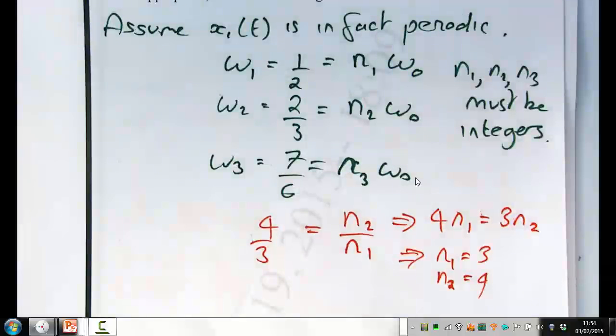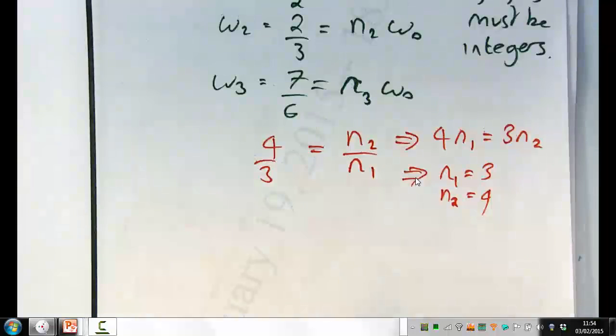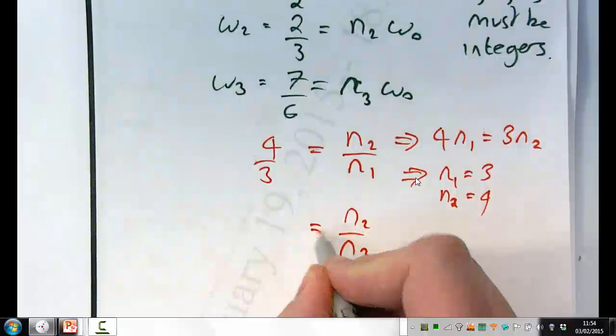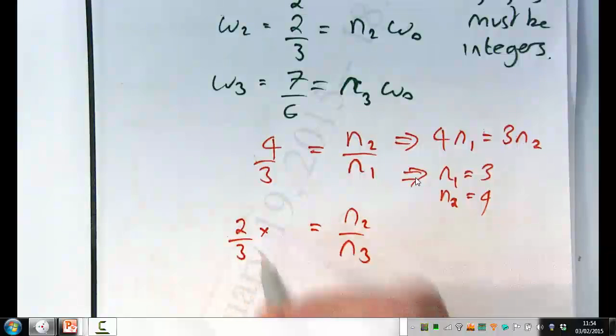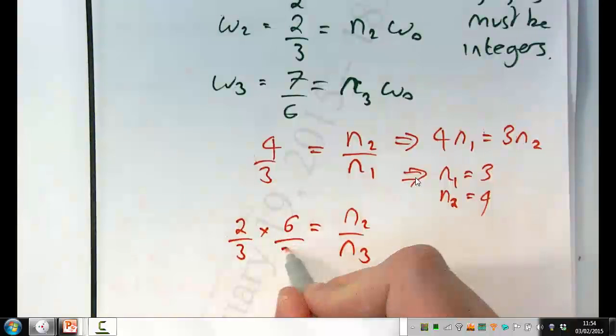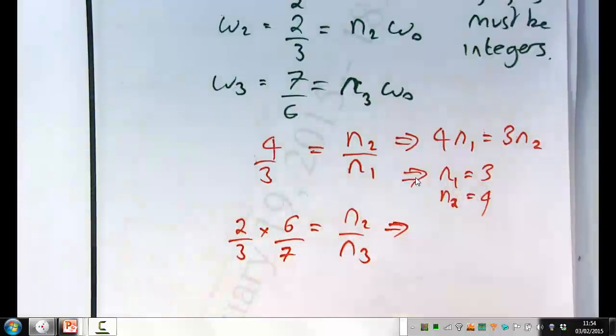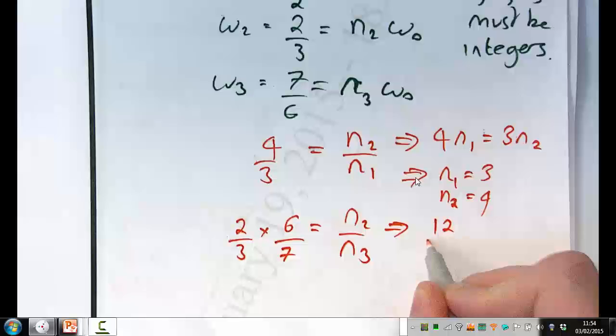And it has to, so whatever the value of omega nought is, the integers n1 and n2 and n3, they have to satisfy all of those three equations. So now what we could do is do it for, let's divide omega 2 by omega 3. So I've got n2 divided by n3 is two thirds divided by seven sixths, or six over seven. So what's that, that's twelve over twenty-one.